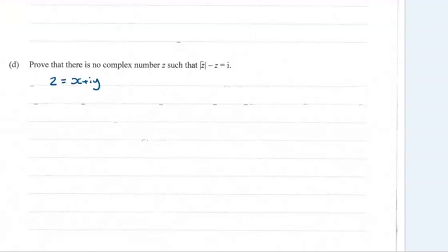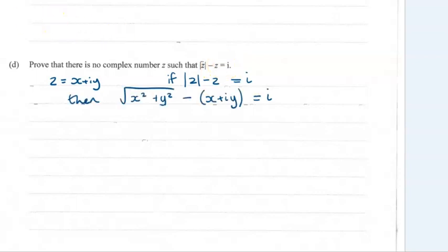Okay, for part d, we want to prove that something can't happen. To do that, we go through as if it could and then show that we get to things that don't make sense. Start with z equals x plus iy — if the modulus of z minus z is i, then we would have the modulus of z equal to the square root of x squared plus y squared, take away z, equal to i.